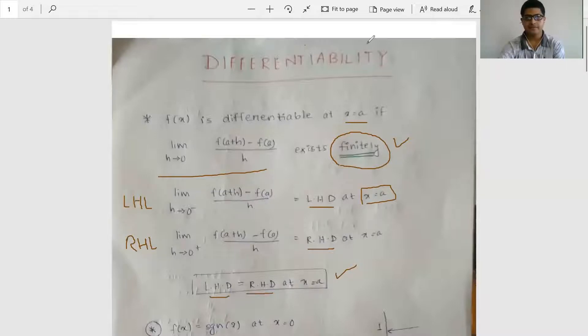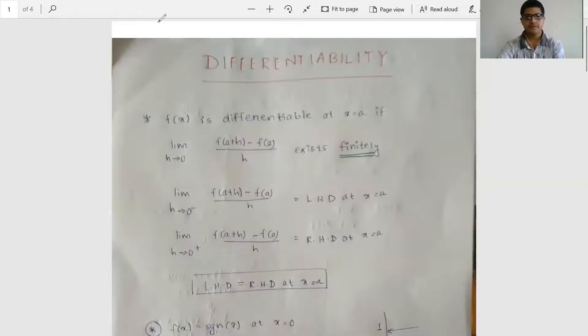So this is the basic concept of differentiability — the condition for f(x) to be differentiable at x = a is that LHD equals RHD at that point. Let us move ahead and do some simple examples.